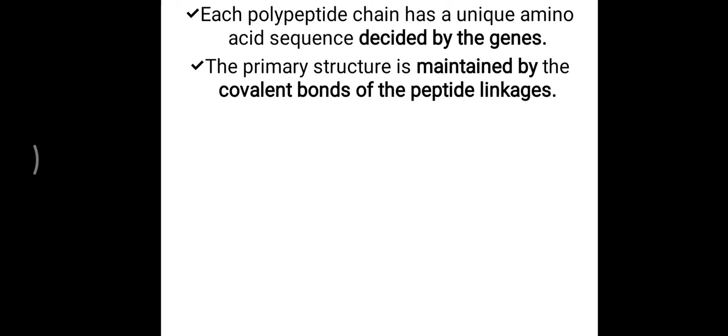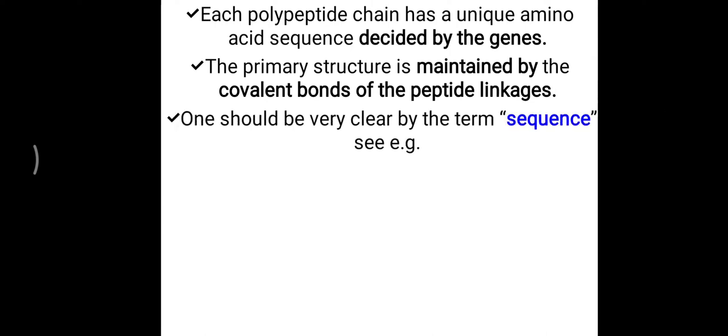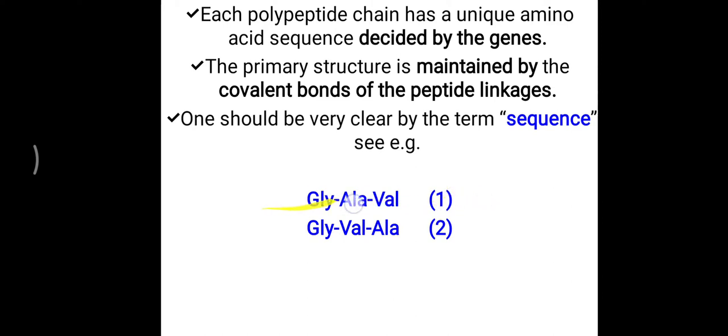Primary structure is maintained with the help of covalent bonds — specifically peptide linkage. The peptide bond between two amino acids forms the main covalent bond maintaining the primary structure. One must be clear about the term 'sequence': glycine, alanine, valine is one sequence (one kind of tripeptide); but glycine, valine, alanine is a different tripeptide — because the sequence differs, making the characteristic difference in the enormous variety of proteins in our body.